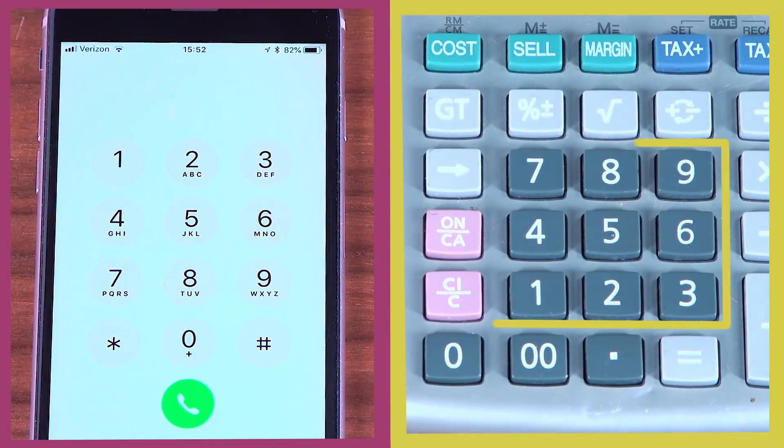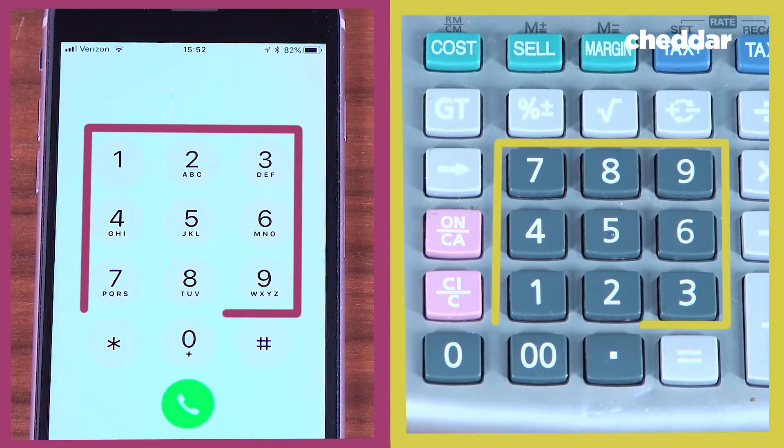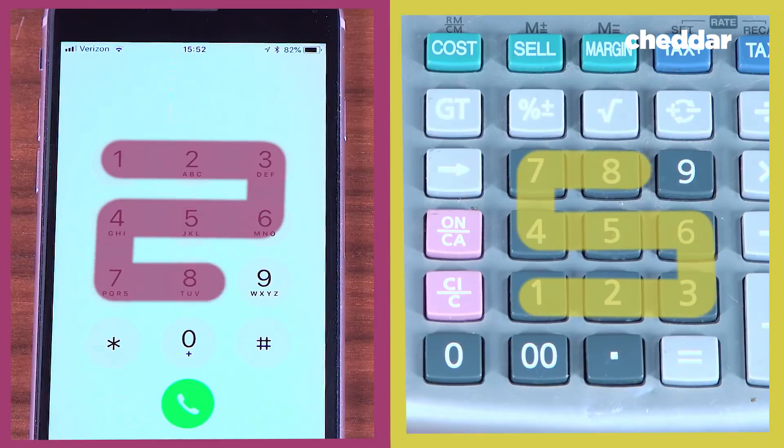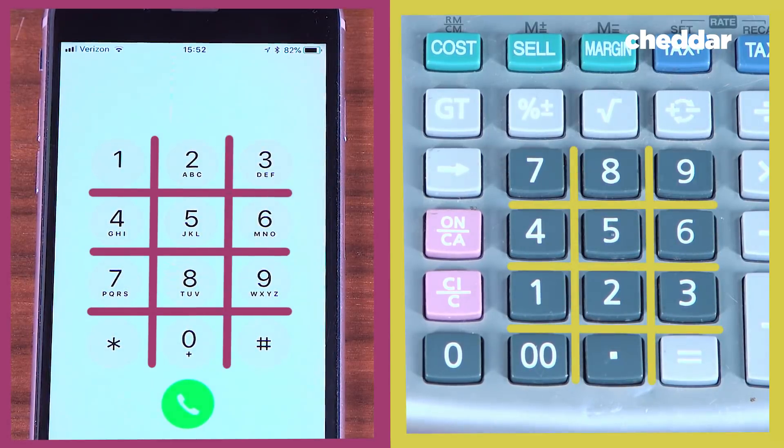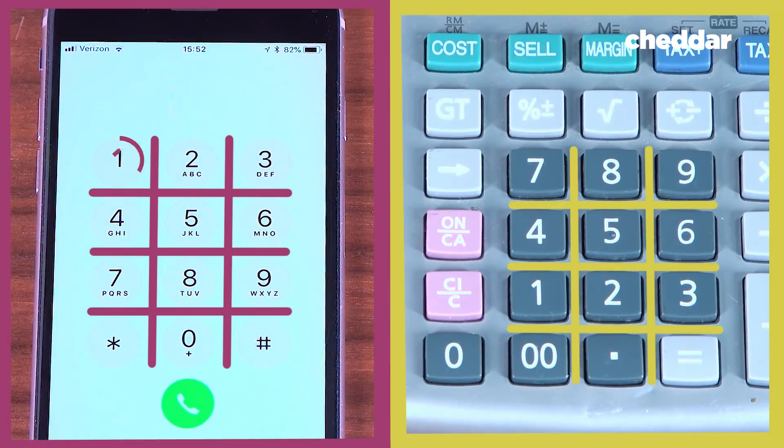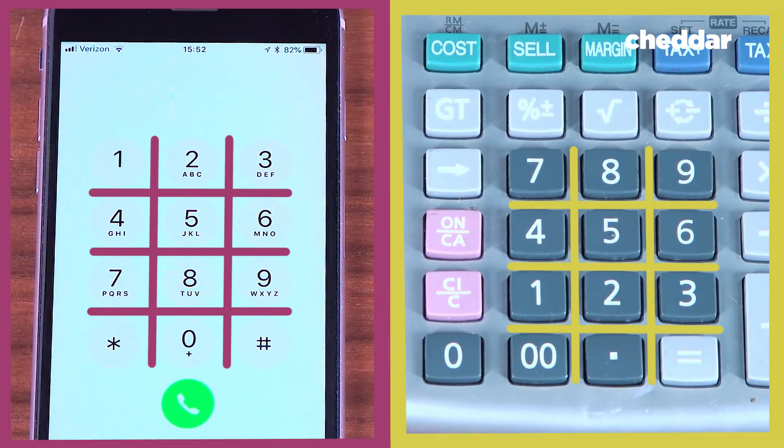Ever notice how the numbering on your calculator and your phone is different? See how the numbers are flipped? Both keypads have a 4x3 grid, but the calculator's numbering starts at the bottom and your phone's numbering starts at the top. So why the flip?